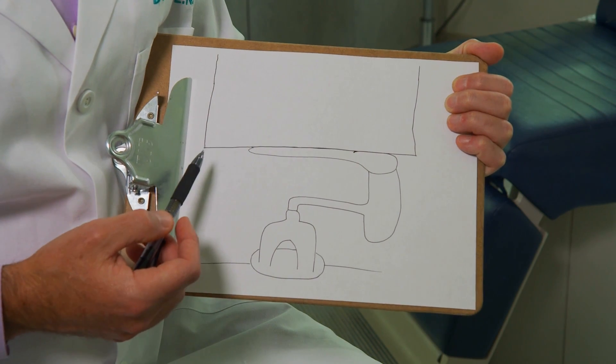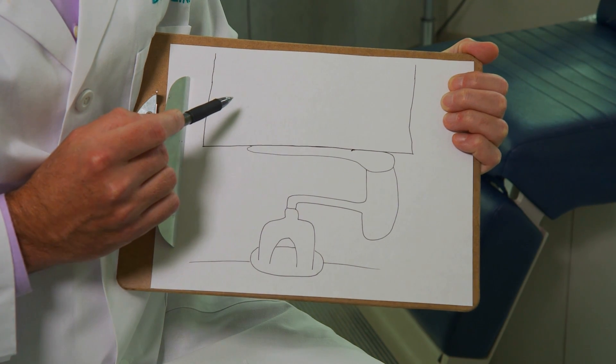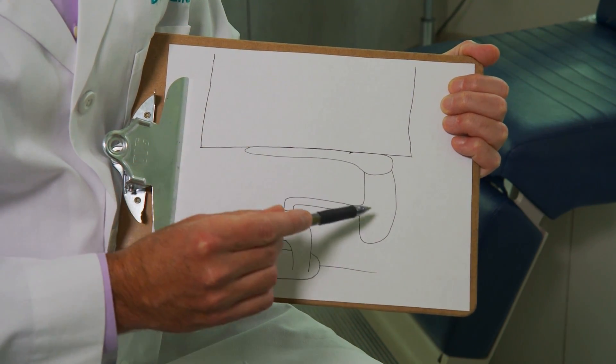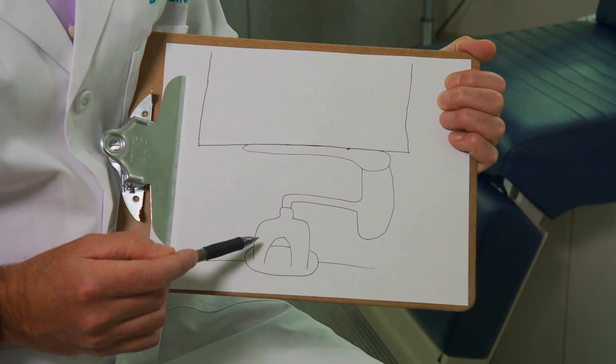This is a diagram of the ear. This is the ear canal cut in cross-section, and then you see the three bones of hearing: the malleus, the incus, and the stapes, which you can see is shaped like a stirrup.